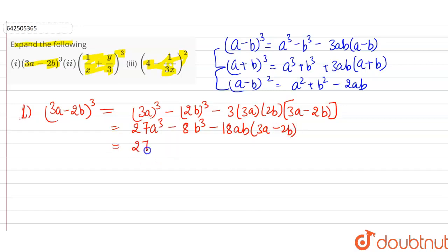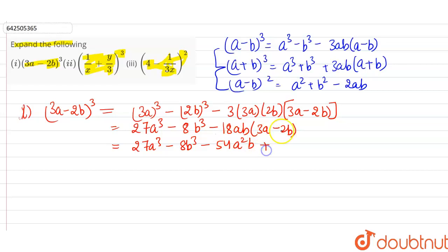Expanding further: 27a³ - 8b³ - 54a²b + 36ab². This is the answer to the first part.